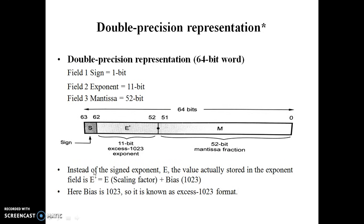Now, double precision representation. Double precision uses a 64-bit word. The first bit is the sign bit, same as in single precision. The E dash field is 11 bits. E dash equals E plus bias. In double precision, the bias is 1023. The remaining 52 bits are the mantissa.